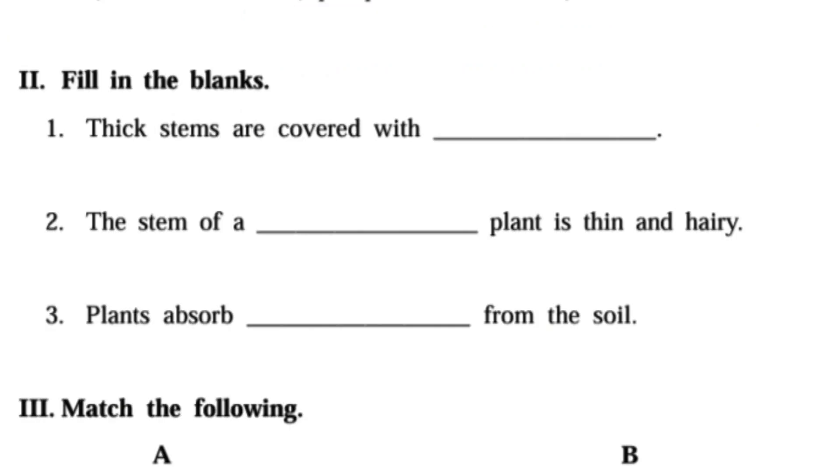Next second one: Fill in the blanks. Thick stems are covered with - Bark. Second one: The stem of a dash plant is thin and hairy - Tomato. Third one: Plants absorb dash from the soil - Water and minerals.